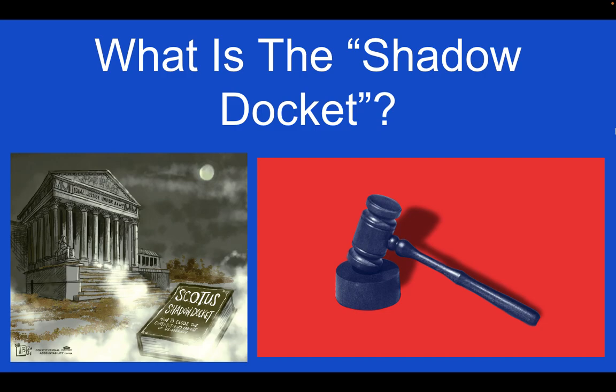Something you'll hear a lot about is the shadow docket — this is the court's emergency quick way to strike down a law or bill that they feel is unconstitutional. It's gotten a lot of press recently because the shadow docket isn't made public, and you don't get to hear their reasoning on why they decide one way or the other, which some have argued makes the court look a bit partisan.